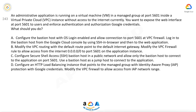You want to expose the web interface at port 5601 to users and enforce authentication and authorization with Google credentials. What should you do? Option A: Configure the Bastion host with OS Login enabled and allow connection to port 5601 at VPC Firewall. Login to the Bastion host from the Google Cloud Console by using SSH in Browser and then access the web application. Option B: Modify the VPC routing with the default route pointing to the default internet gateway. Modify the VPC Firewall rule to allow access from the internet 0.0.0.0/0 to port 5601 on the application instance.